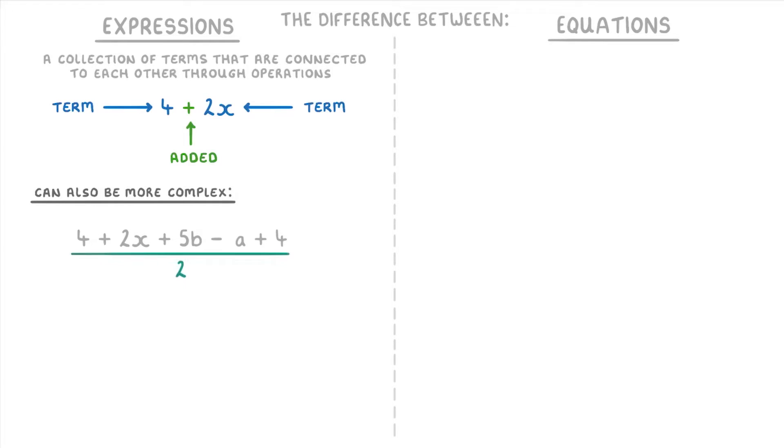The important thing though is that they don't contain an equal sign. If an expression does contain an equal sign, then it would actually be an equation rather than an expression. This is the major difference between the two.